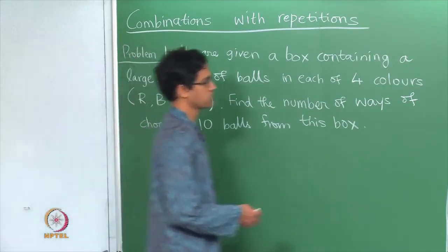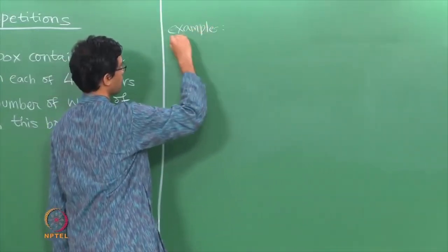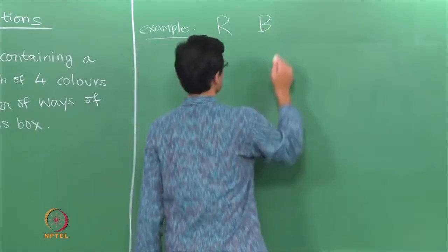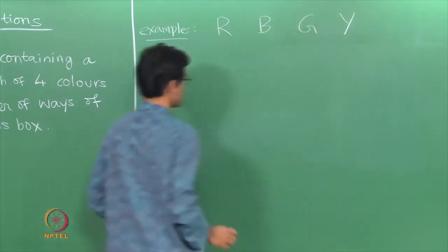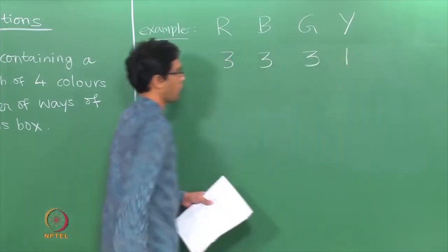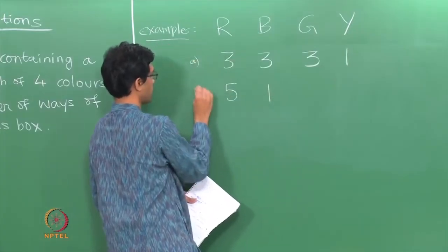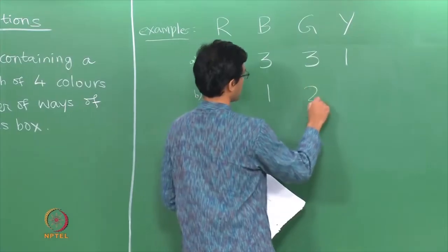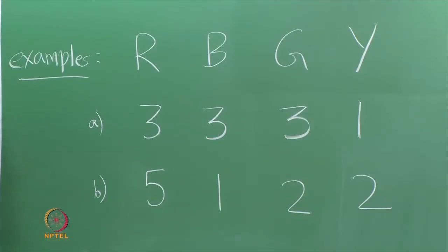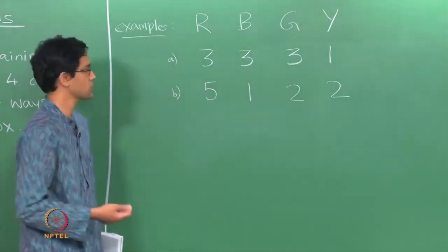Let us look at various examples of choices. We could keep track of the number of red, blue, green and yellow balls. For instance, one choice could be 3 red, 3 blue, 3 green and 1 yellow. Another choice could be 5 red, 1 blue, 2 green and 2 yellow, and so on. The key constraint is that the total number of balls chosen must be 10.